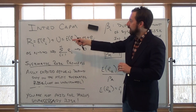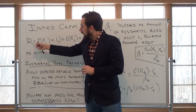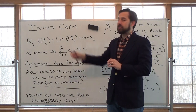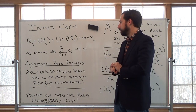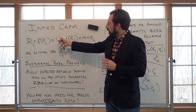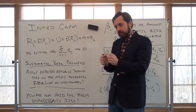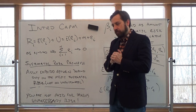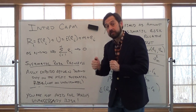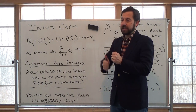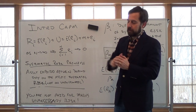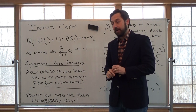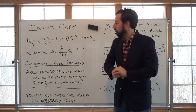What we have is the return on some capital asset i: the actual return equals the expected return plus some unexpected portion. The unexpected portion of a stock's return has two kinds. It could be unexpected returns that affect all stocks — for example, interest rates go up and stock prices go down, or there's a global pandemic and all stocks go down.